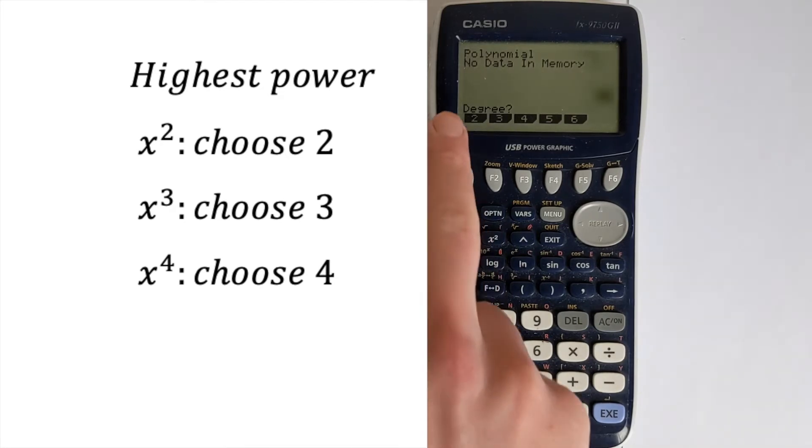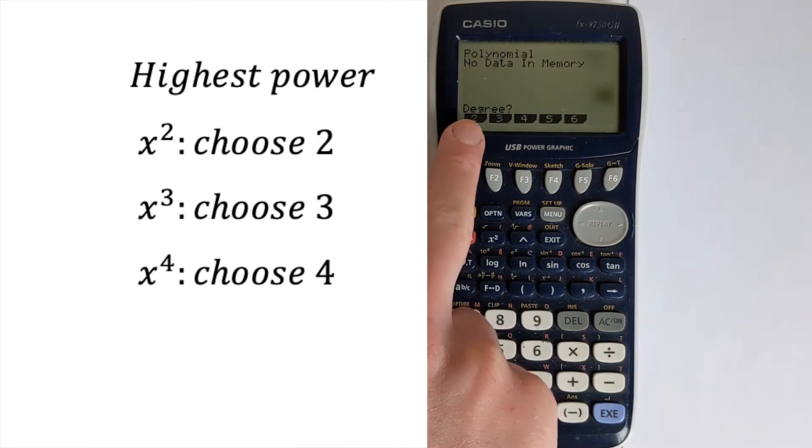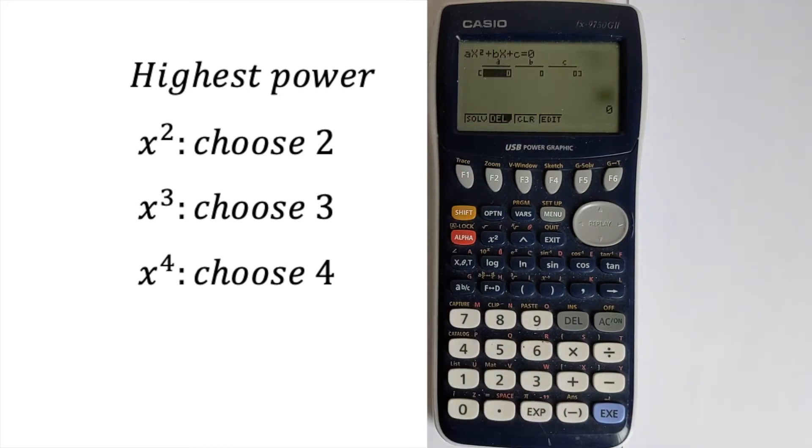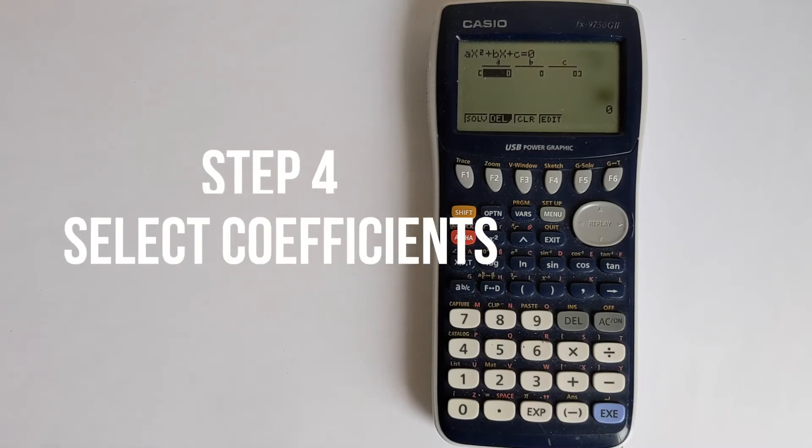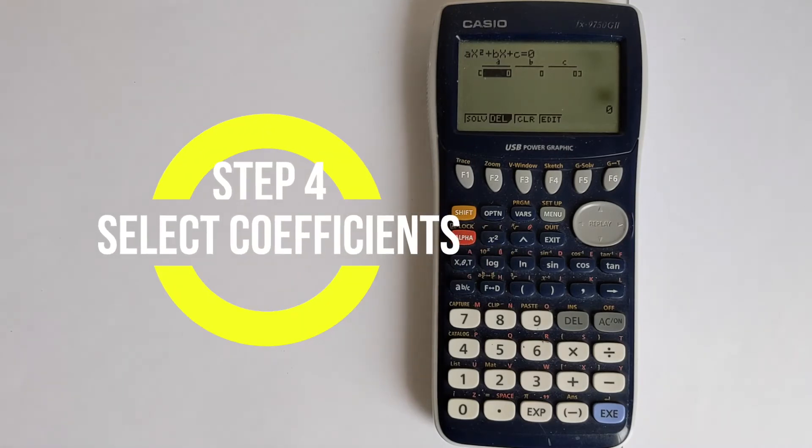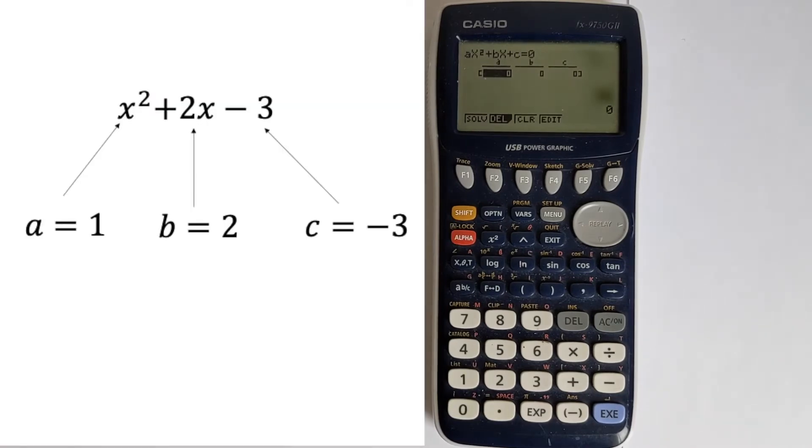So in this case, for a quadratic, we've got the highest power being 2, so we choose 2. That will bring up this screen here. What we now need to do is select our coefficients. I've shown on the left how these match up. These are the numbers in front of x² being A,